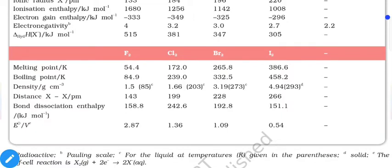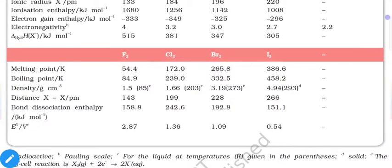Melting points and boiling points increase going down the group. Iodine can exist as a solid at normal temperature because it has comparatively high melting and boiling points. Bromine is a liquid, while F₂ and Cl₂ are gases. Density increases with increasing atomic number. The X–X bond distance in these diatomic molecules also increases as atomic size increases.